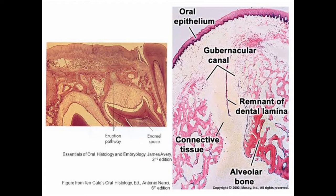Every erupting tooth passes through a small canal known as the gubernacular canal. This canal is inside the bone and consists of remnants of dental lamina. It also has a small strand of fibrous tissue known as the gubernacular cord. As the tooth erupts, the canal widens to accommodate the size of the tooth.